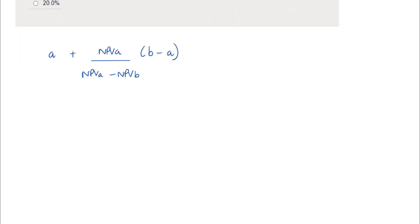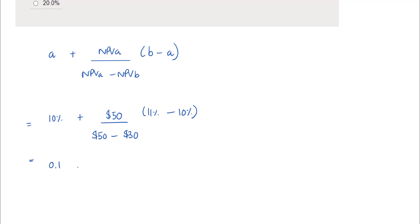Now it's simply a case of plugging these numbers into the formula. So: 10% plus the NPV using that rate, which was 50, divided by 50 less 30, multiplied by 11% less 10%. Expanding this out: 10% is the same as 0.1, we can simplify to $50 divided by 20, and 11% minus 10% equals 1%, which is the same as 0.01.